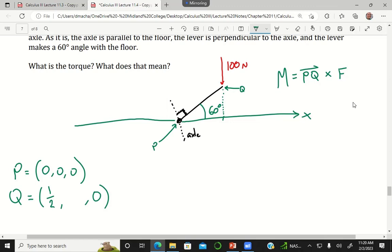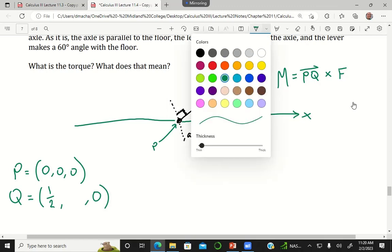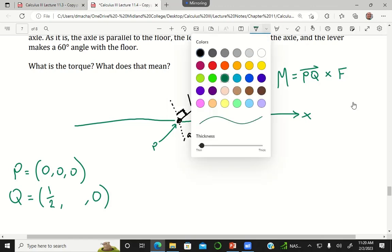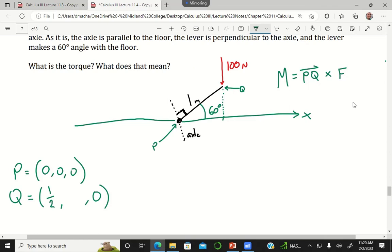Length times sine, sine of 60, yeah. That would be one meter times sine of 60 degrees. What is sine of 60 degrees? Yeah, so this would be root three over two meters for my point Q.